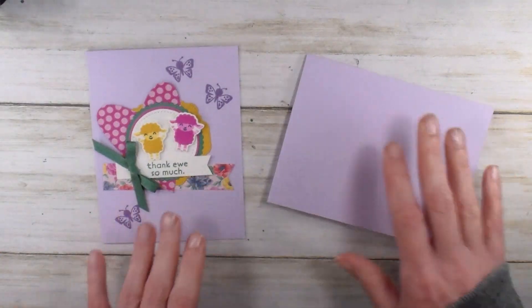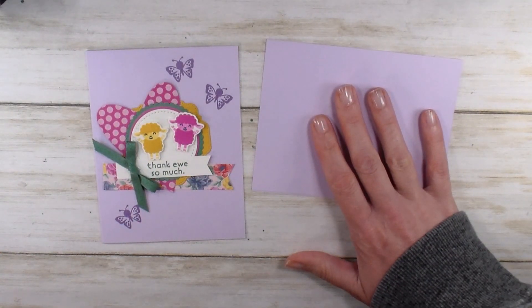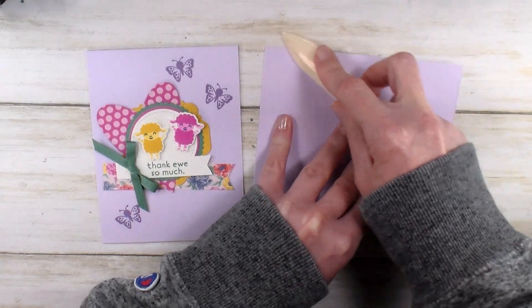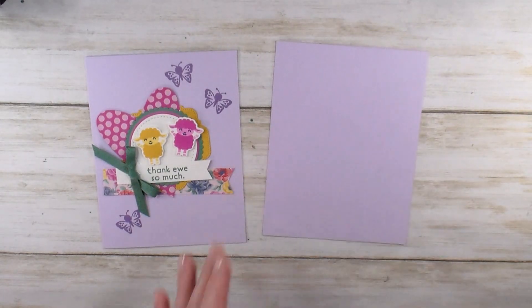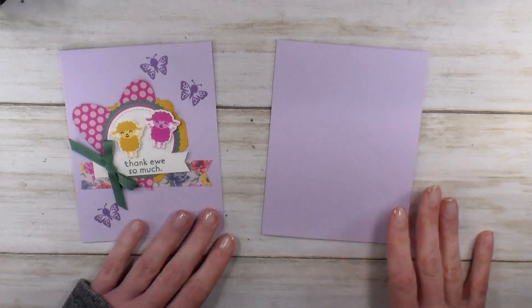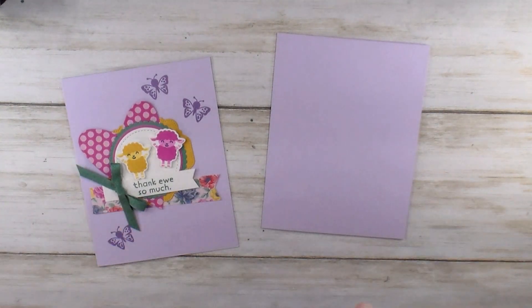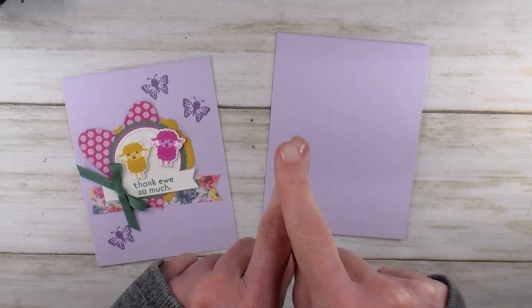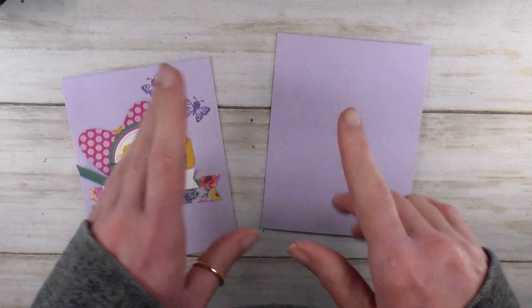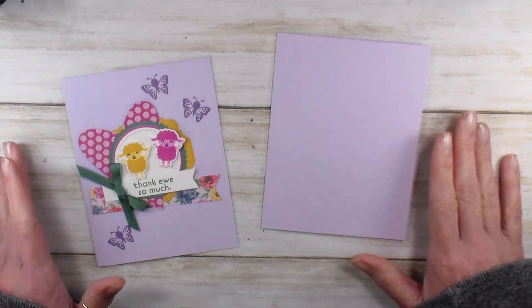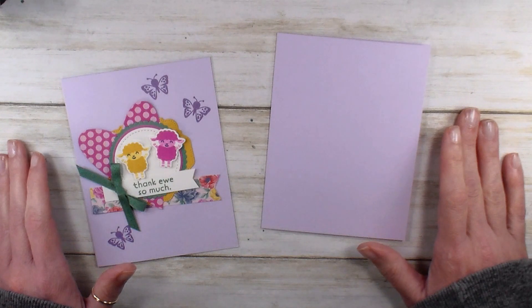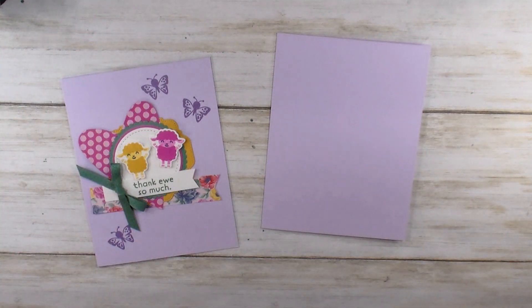My card base is Purple Posy. It's 8½ by 5½, scored at 4¼, and then folded. All the measurements that you need for this project will be available on the project sheet on the blog. If you're watching on YouTube, click Project Details. It'll take you to the blog. The project sheet printable with all the measurements is a clickable link right underneath the embedded video, and there's always a project sheet.